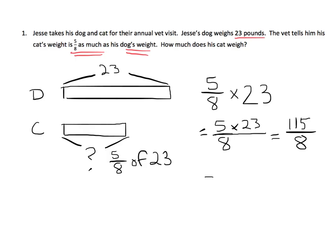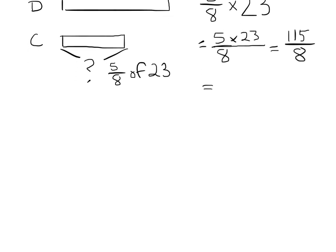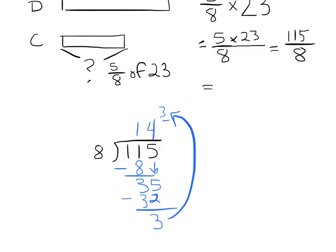So 115 eighths. So what does that mean? Well, that means we're going to have to divide, and so I'm going to go down here, and I'm going to simplify that fraction, because 115 eighths doesn't really tell me much. I mean, it's the right answer, but I'm going to use division so that we can get some sort of sense of what that fraction is equal to. So 115 divided by 8 is 14 with a remainder of 3, so then we bring down that 5, and 8 times 4 is 32, so our remainder is 3, so that would be 3 eighths.